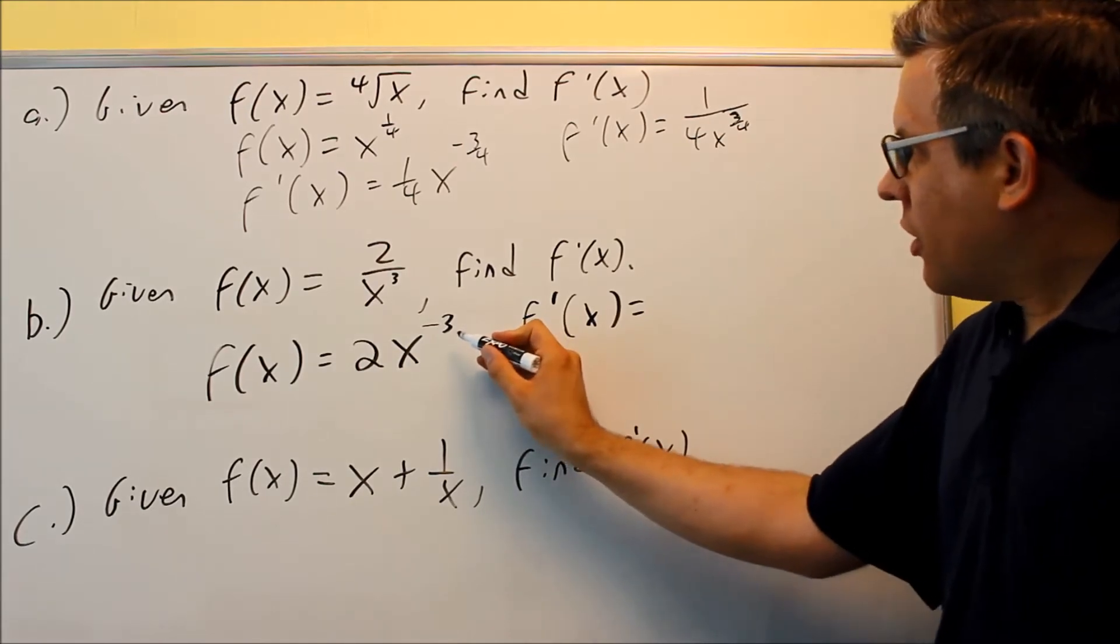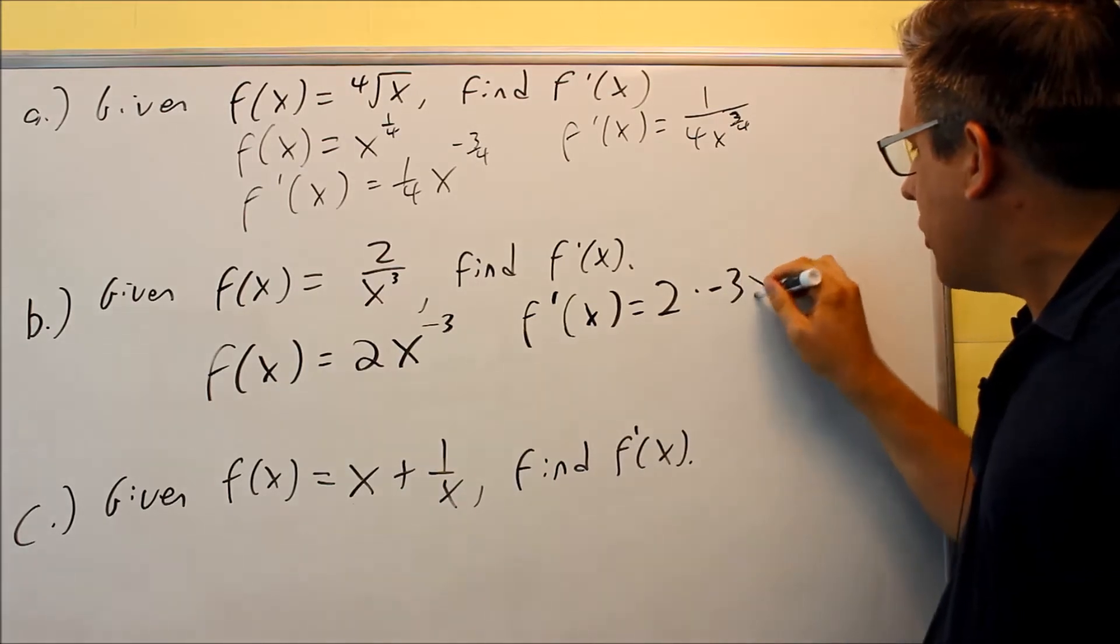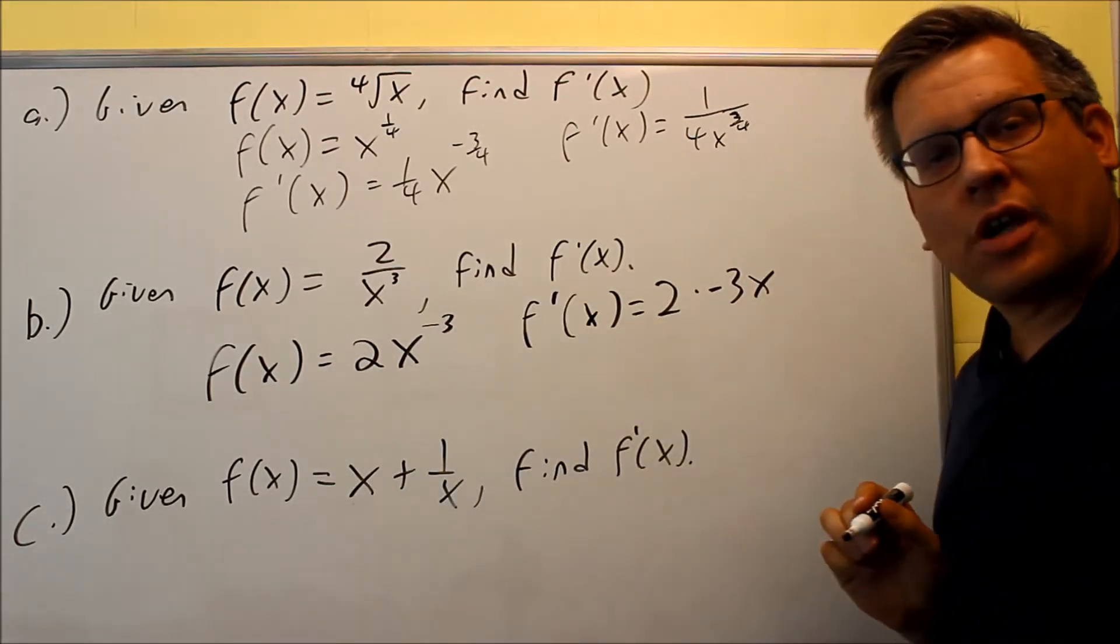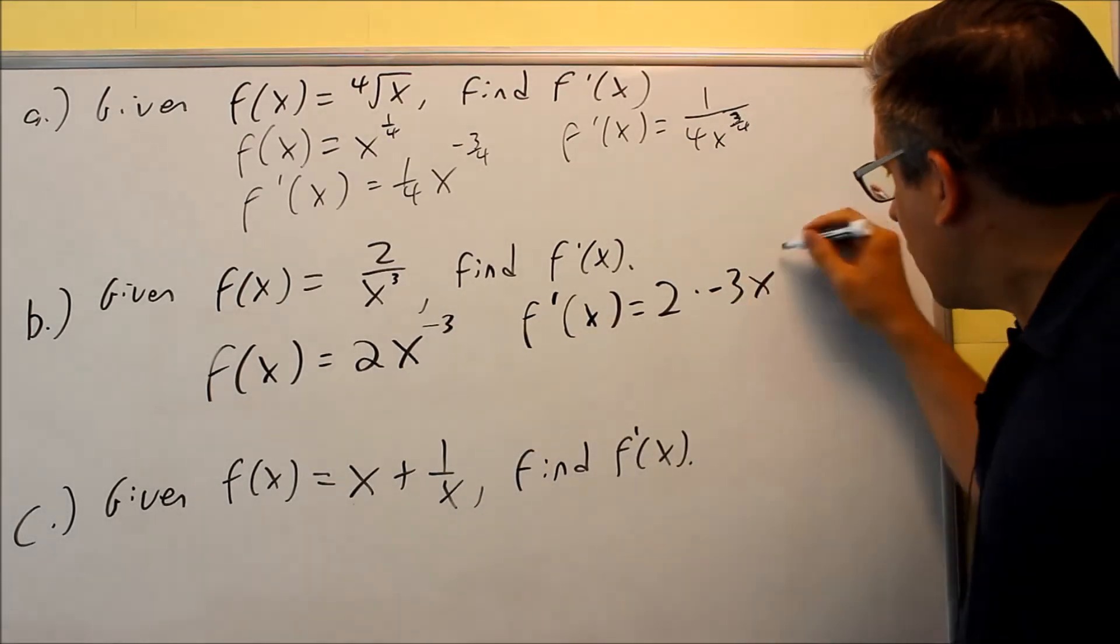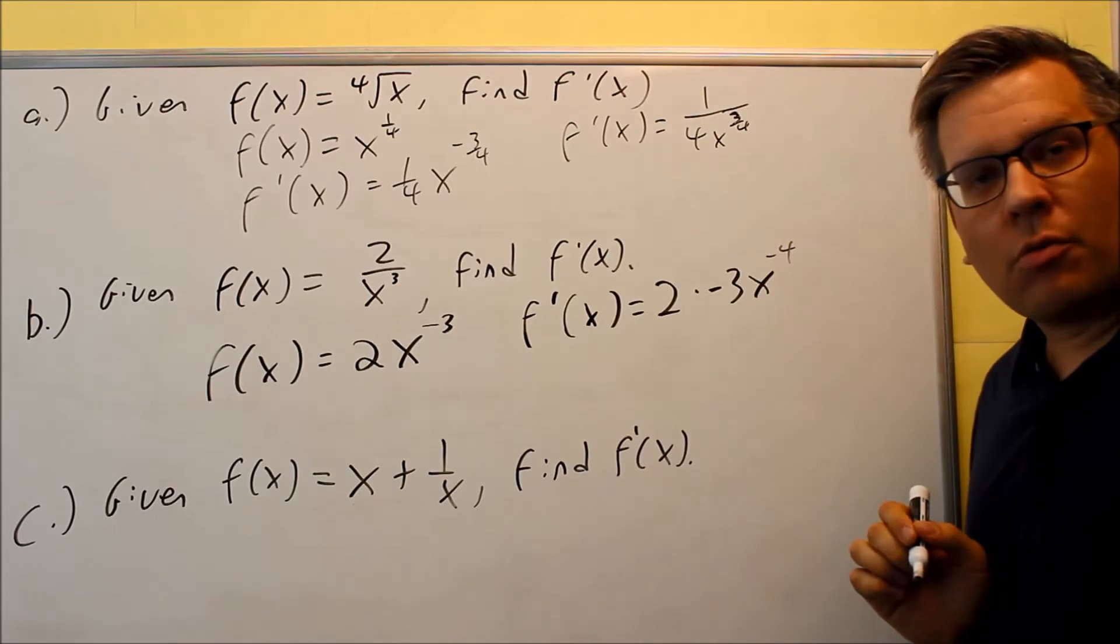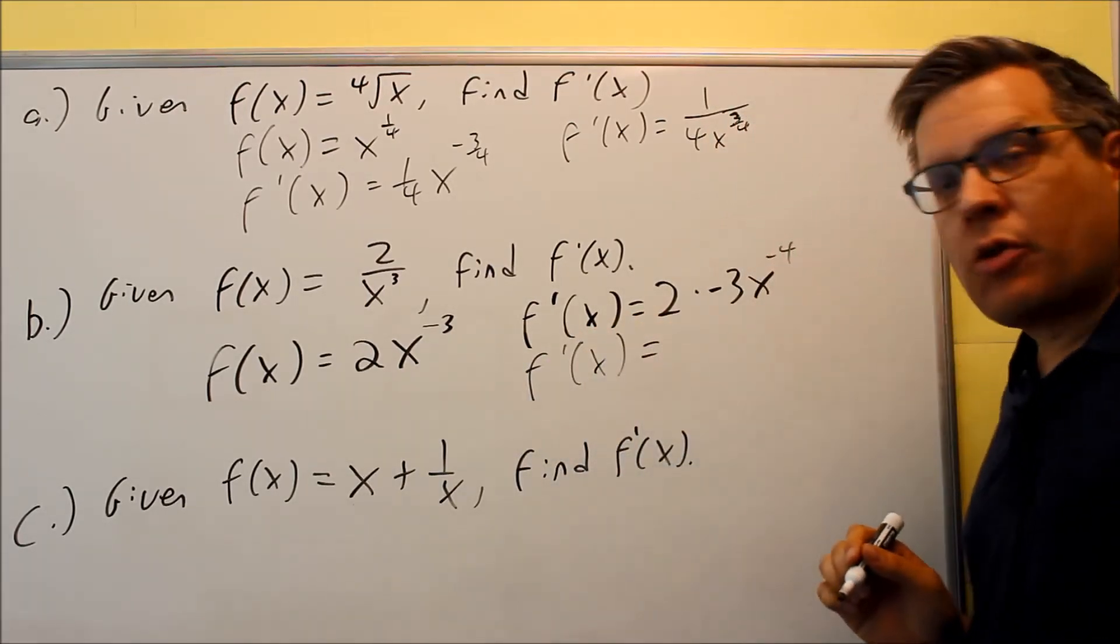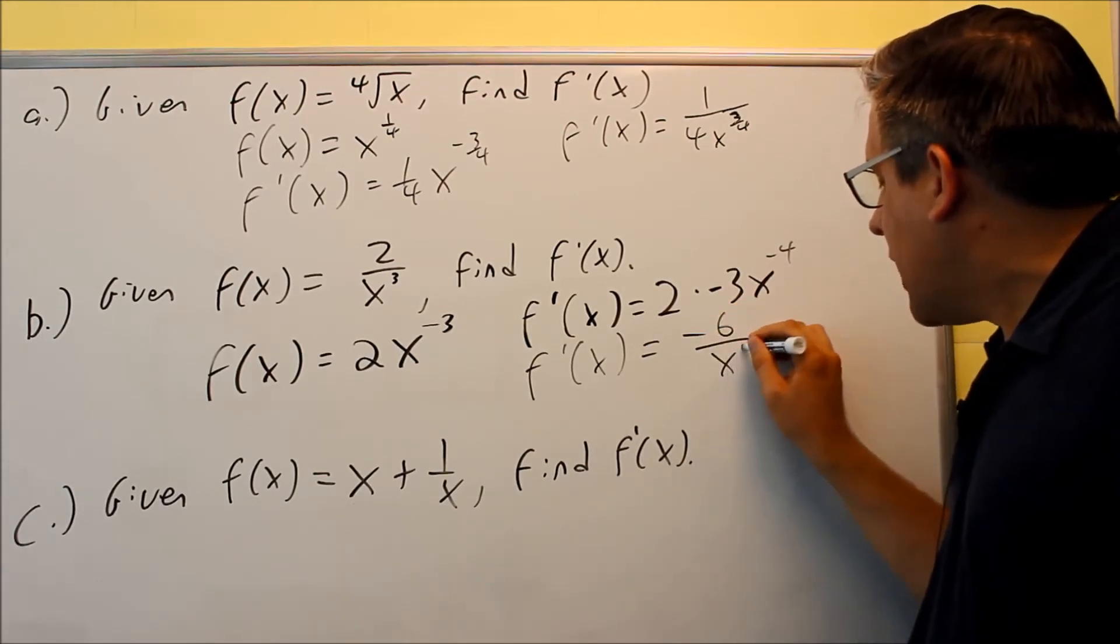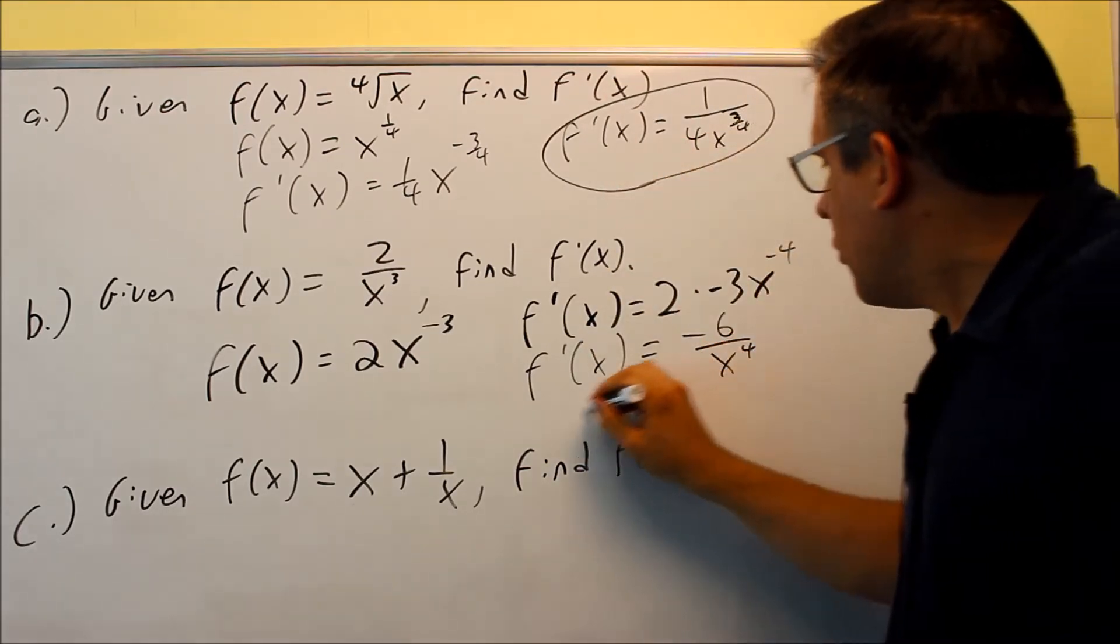So what will happen here is, we have a 2 there, and then the negative 3 is going to come down in front, x, and then you've got to subtract 1 from this power, so be careful, you're subtracting from that. So negative 3 minus 1 will give you negative 4. Then the last thing you're going to do is just rewrite it, again with positive exponents. That's a negative 6 that will be on top, and on the bottom you can put x to the 4th. So I'll circle my answers here, there's that one.